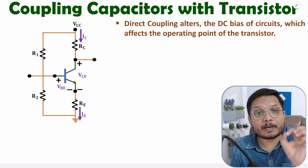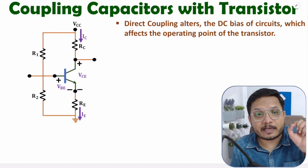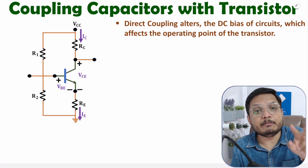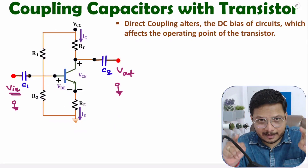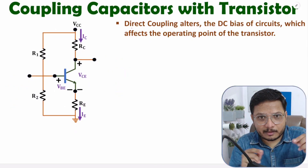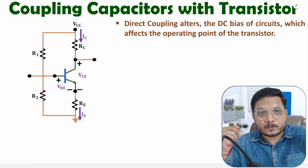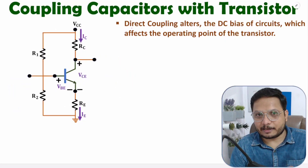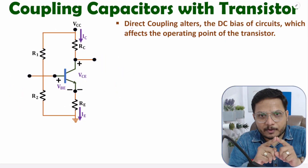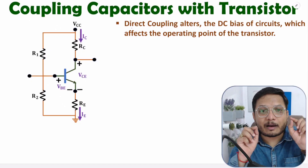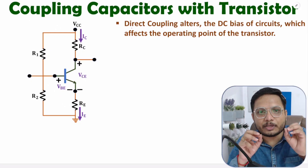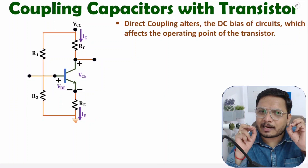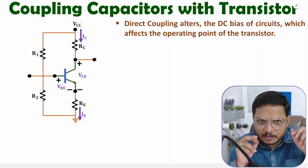First of all, you need to understand what is a Coupling Capacitor. A Coupling Capacitor is a capacitor that we connect in series with Input and Output. So with any circuit that has Input and Output, we connect Coupling Capacitors in series with both. If you don't provide a Coupling Capacitor, then you will have Direct Coupling, and if you have Direct Coupling, there are some issues — which I will explain in this video.